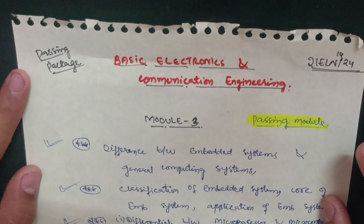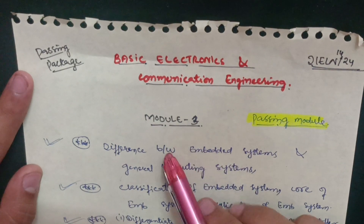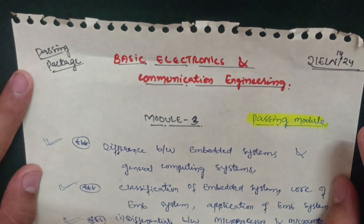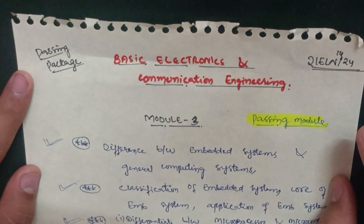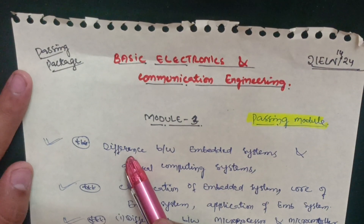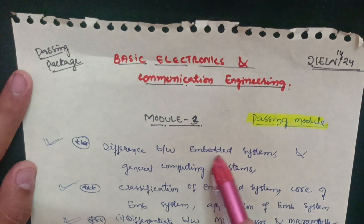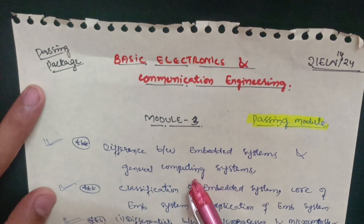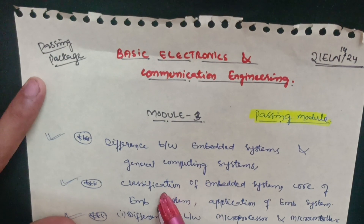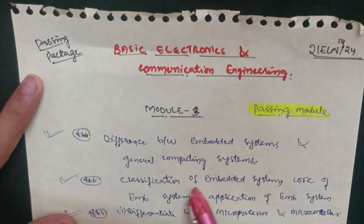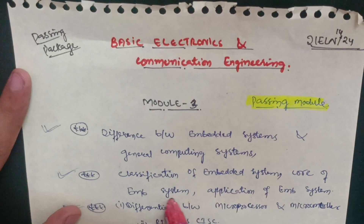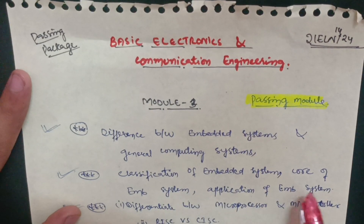Let us start with the passing module, which is Module 3. In this module you have some theoretical questions that will definitely be asked in the examination. The first important question is the difference between embedded systems and general computing systems. The next one is the classification of embedded systems, and you should also have some knowledge of the core and applications of embedded systems.